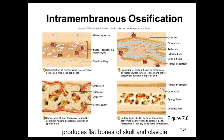In this diagram showing intramembranous ossification, mesenchymal cells and blood capillaries are identified. It shows the condensing of mesenchyme into a soft sheet permeated with blood capillaries, then the deposition of osteoid tissues and osteoblasts. It goes on to show the formation of the honeycomb structure referred to as trabeculae, formed by mineral deposits creating spongy bone. Finally, the surface of the bone is filled in with deposition, converting spongy bone into compact bone, with persistent spongy bone remaining in the middle layer.